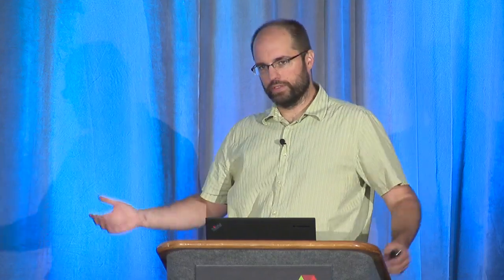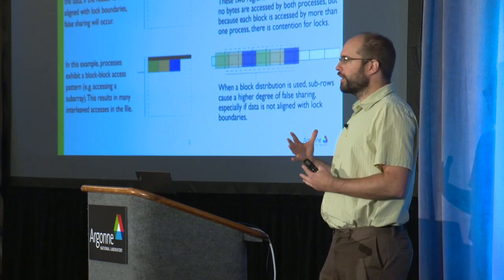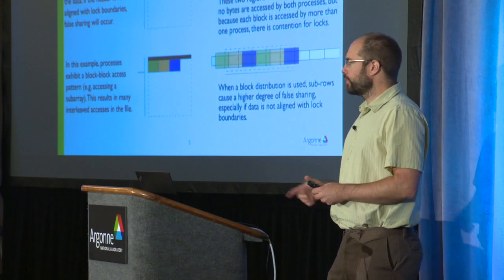This is what Phil was talking about: how if you tailor your access for one sort of locking structure and locking regime, and then move to a different system with a different file system, everything is totally different and wrong. Let's talk a little more about how this happens naturally, because this is the fundamental building block of why all these data organizations are important.